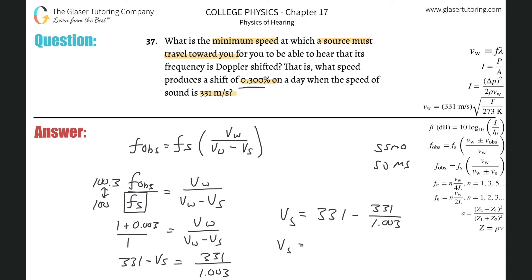So 331 minus 331 over 1.003 works out to about 0.99 meters per second — roughly 1 meter per second to 3 significant figures. That's the velocity the source must travel toward you. Thanks for tuning in — please subscribe and we'll see you soon!